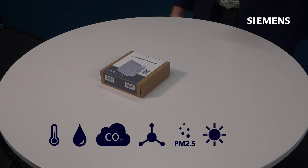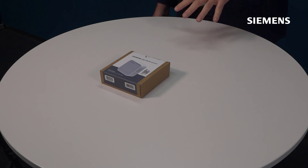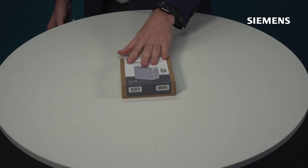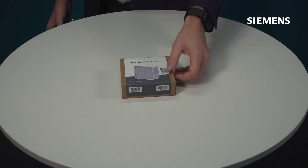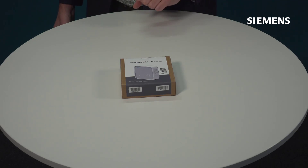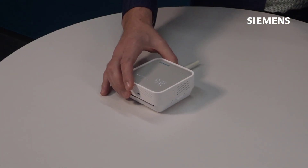When you unbox this device, this is the box that you will find. Always remember that here we have a QR code — this is the easiest and fastest way for you to find technical documentation and the installation guide.